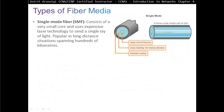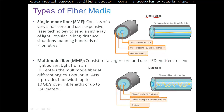Types of fiber media: we have single-mode fiber, or SMF, which consists of a very small core and uses expensive laser technology to send a single straight path of light. It is popular in long-distance situations spanning hundreds of kilometers, with a core of 9 microns. Then we have multi-mode fiber, which consists of a larger core and uses LED — light emitting diode — to send light pulses. Light from the LED enters the multi-mode fiber at different angles, allowing multiple paths of light. This is popular in LANs, providing up to 10 Gbps over distances up to 550 meters.